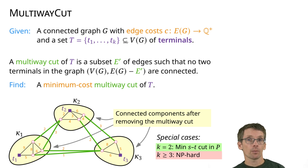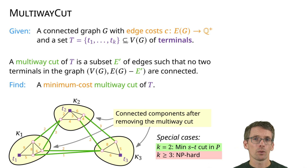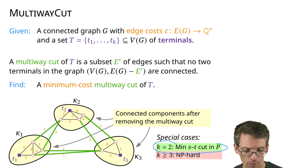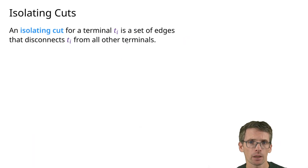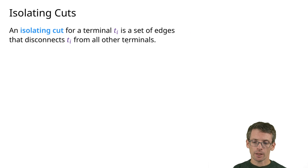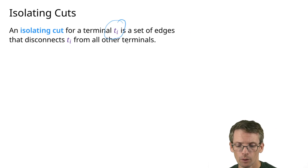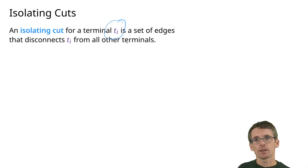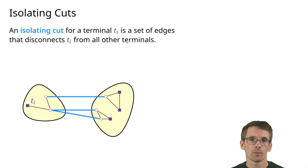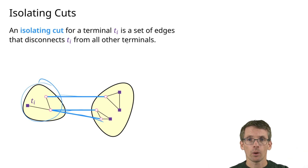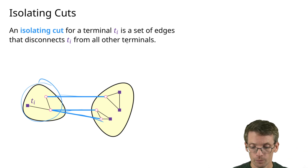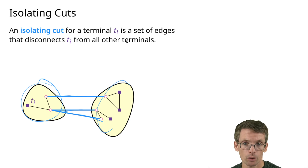We're going to use the fact that k = 2 is polynomial-time solvable in combination with isolating cuts. The isolating cut for terminal t_i is one that disconnects this terminal from all other terminals — t_i is in one component and all other terminals are not in that component, though among each other they could be in one component.